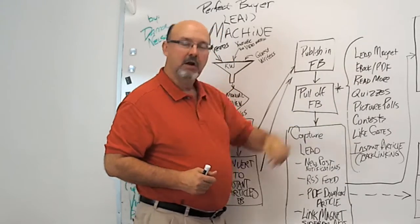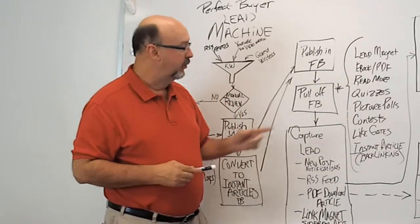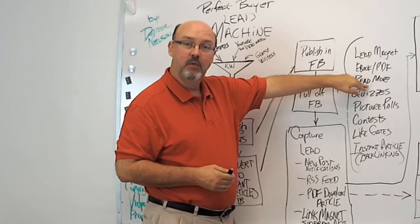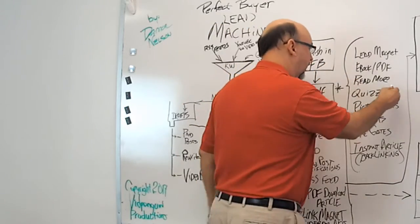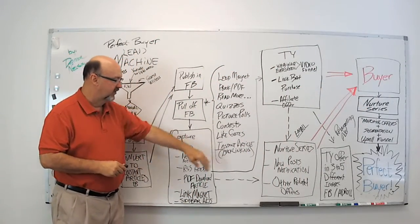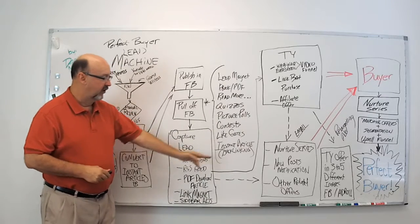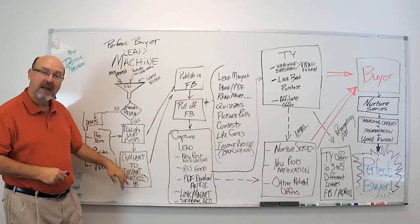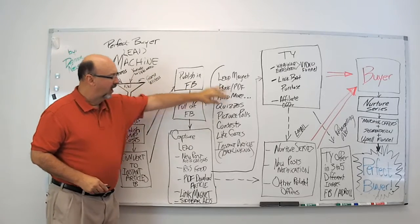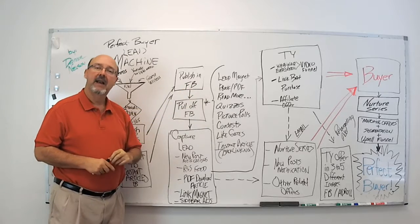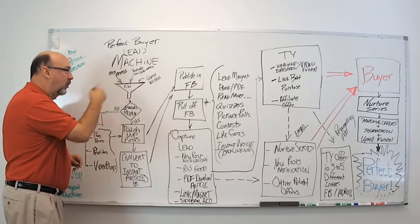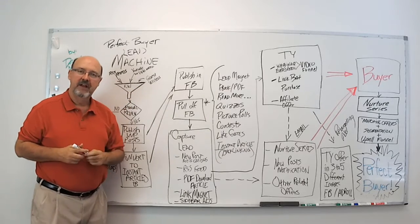Here are the methods that we're going to talk about. I'm going to go into detail how you pull them out of Facebook. Lead magnets, eBooks, read more. This is one of the magical ones right here. Read more. Quizzes, picture polls, contests, light gates, instant article backlinking. Instant article has a backlinking section here. We're going to be going into that. But we'll have more in here and we'll go into detail about how to use them, when to use them, and with who are you using.